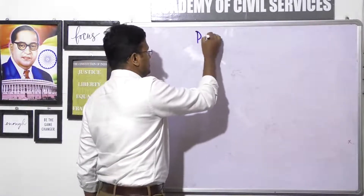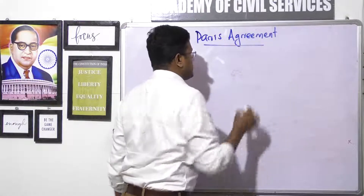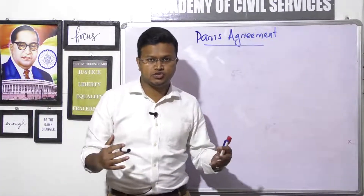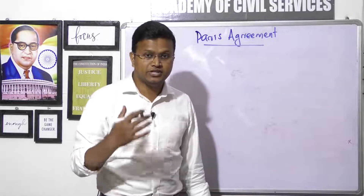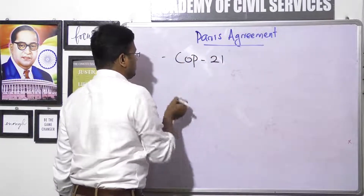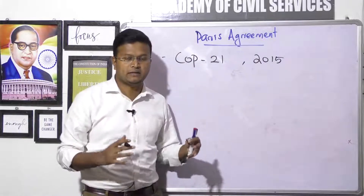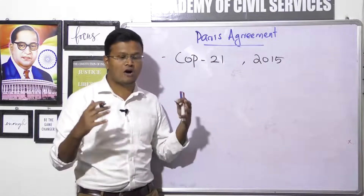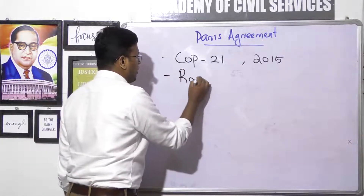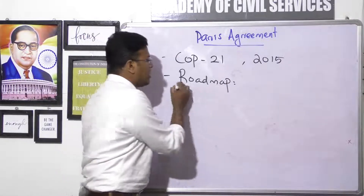Every year, the United Nations climate change conference happens in the month of December. The 2015 climate change conference was held in Paris city. It was the 21st Conference of Parties — COP 21 — held in the year 2015. In this conference, an agreement was prepared: a roadmap for all nations in the world to take action against climate change in the post-2020 period.